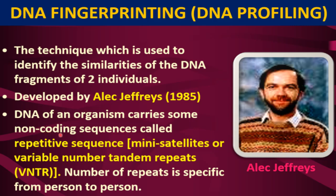DNA of an organism carries some non-coding sequences called repetitive sequences. Satellite DNA is also part of that repetitive sequence, and in that there is one category — mini satellite. This mini satellite DNA is also called variable number tandem repeats (VNTR). Tandem repeats means highly repeated sequences, and these repeated sequences are present in variable numbers in the DNA of different people.